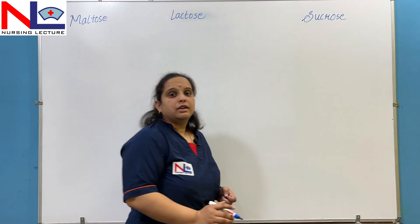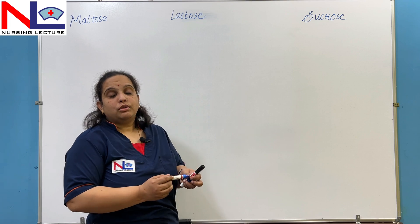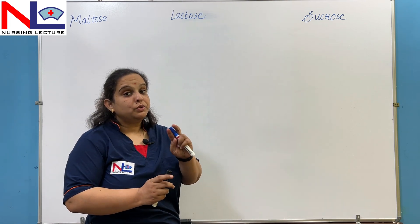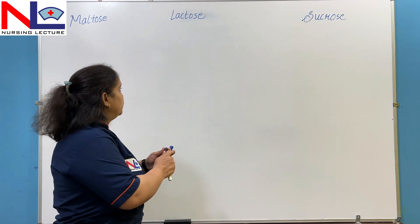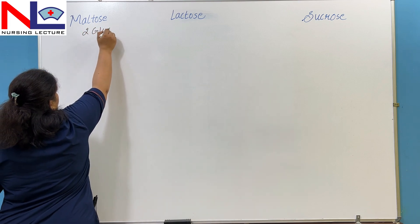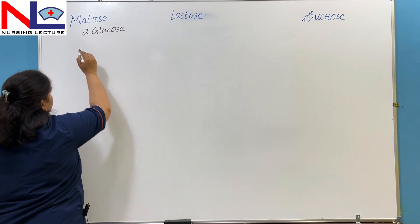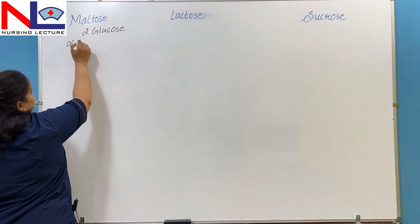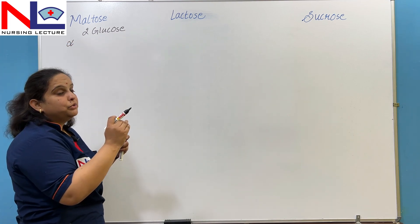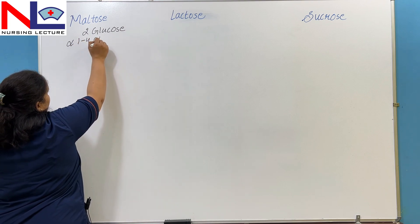First we will deal with maltose. Maltose is the sugar molecule formed by two glucose units with alpha orientation. The two glucose molecules are joined together by an alpha-1,4 glycosidic bond.